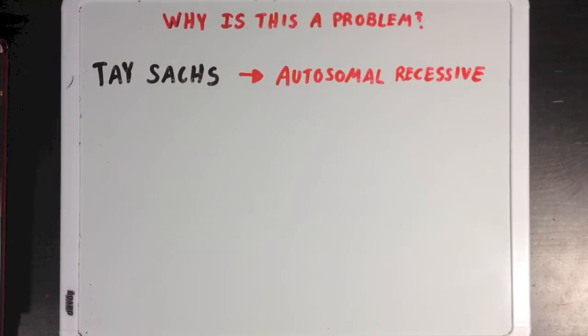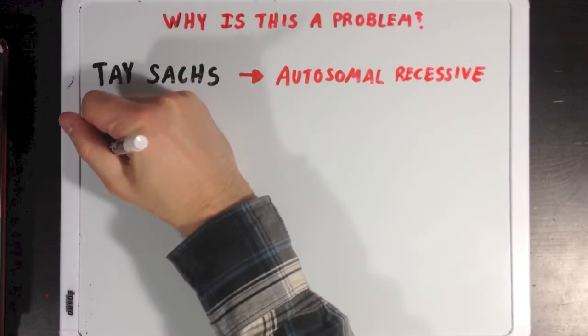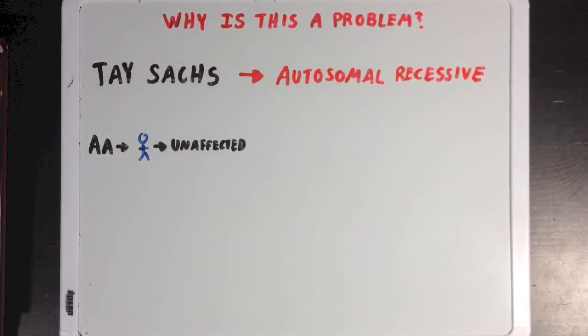So Tay-Sachs disease is an autosomal recessive disorder. And what that means is that people with no copies of the genes are unaffected by the disease. And I've drawn these people in blue.